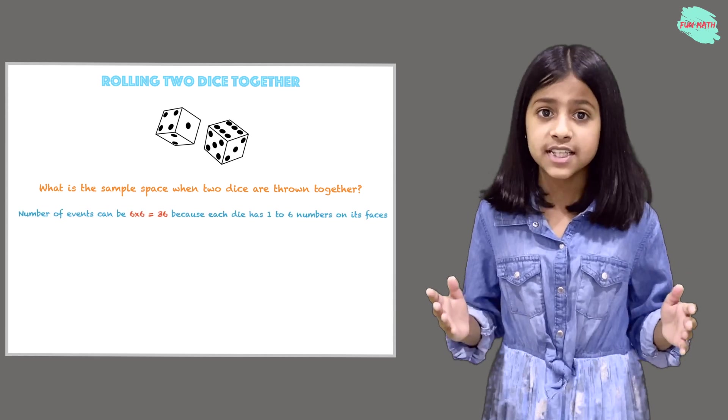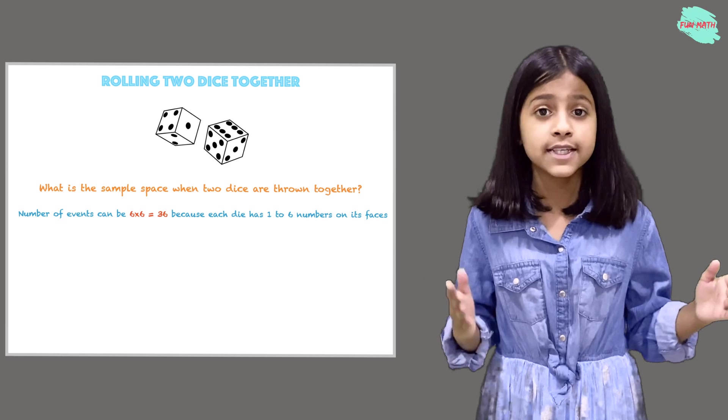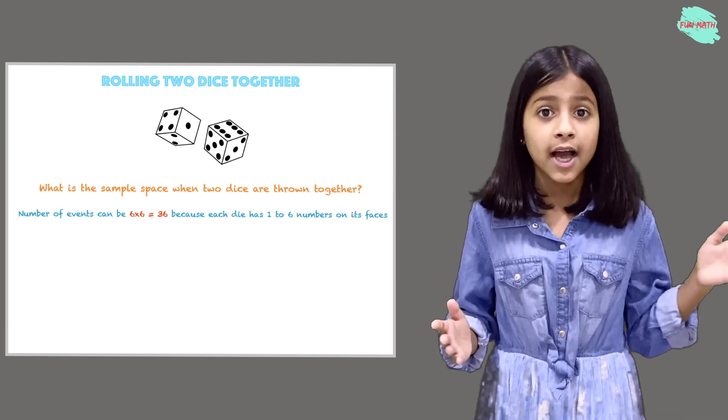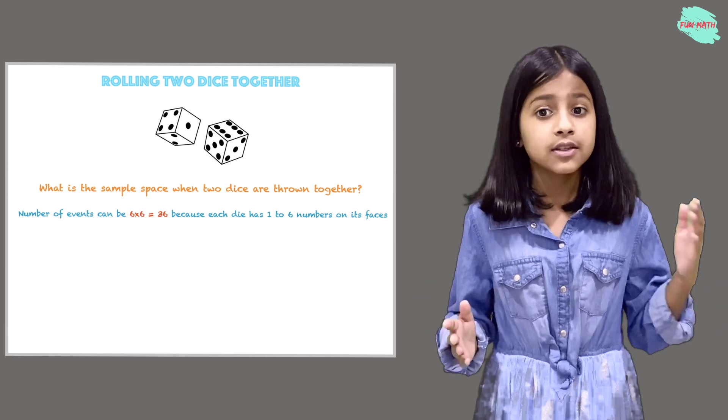Number of events can be 6 times 6 is 36, because each dice has 1 to 6 numbers on its faces.